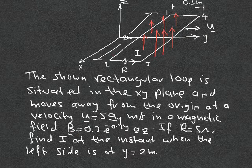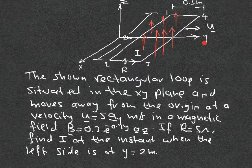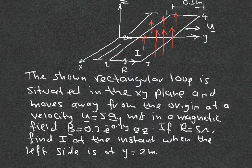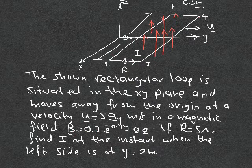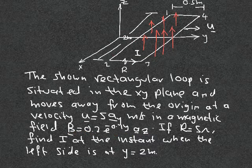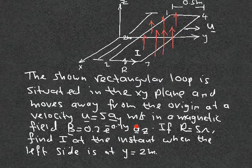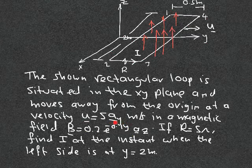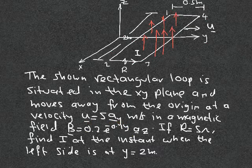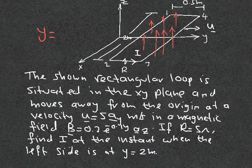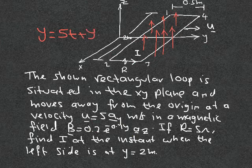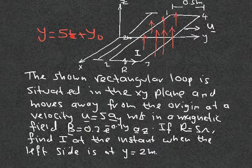There is an implicit dependence on time because the magnetic field is a function of y, but as the loop moves it goes through weaker and weaker magnetic field. So psi is decreasing with time. Since the loop moves at constant speed of 5 in the y direction, we can write y of the left edge as 5t plus y-naught. Taking the derivative dy/dt gives the velocity, which is 5.